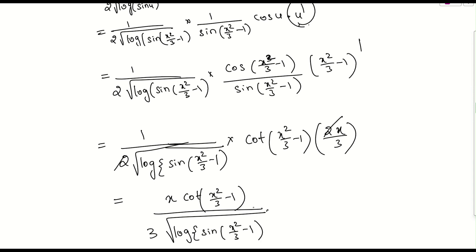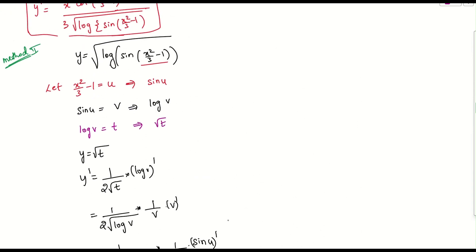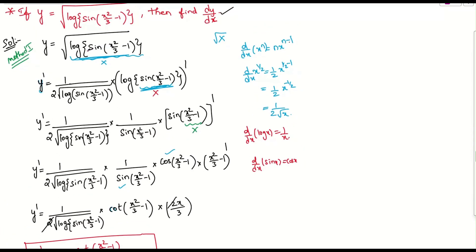The same problem can be done by taking the unknown parts as substitutions. While substituting unknowns you have to come from inside. First I took x squared by 3 minus 1 as u, then sine of the whole thing as v, then log of something as t — one by one. Whenever you want to do substitution, or whenever you want to do direct differentiation, come from the outside. Thank you.